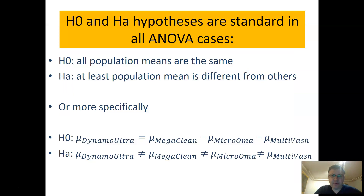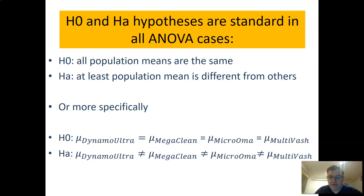The first step is to state the hypothesis. With ANOVA, the null hypothesis is that all population means are the same. More specifically, the null hypothesis says that the mean values for Dynamo Ultra, Mega Clean, Micro Oma, and Multi Wash are all equal. The alternative hypothesis states that at least one mean value is different from the others.